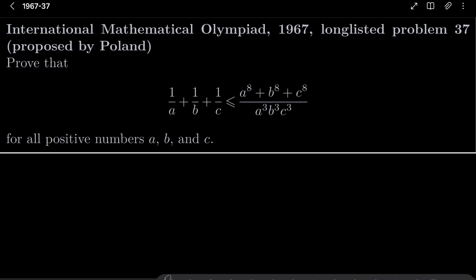We wish to prove that 1/a + 1/b + 1/c is less than or equal to (a⁸ + b⁸ + c⁸)/(a³b³c³) for all positive real numbers a, b and c.